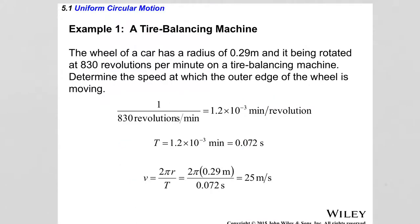Let's do one example problem to illustrate the concept of period and how we calculate the speed of rotation. This example is about a tire balancing machine. The wheel of a car has a radius of 0.29 meters and it's being rotated at 830 revolutions per minute on a tire balancing machine. Determine the speed at which the outer edge of the wheel is moving.